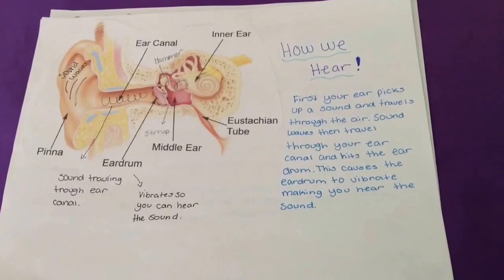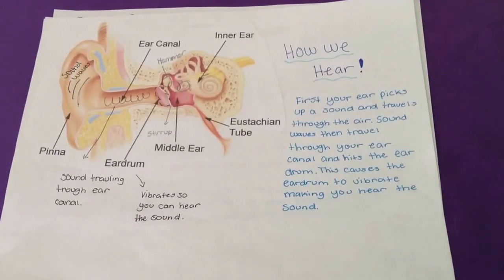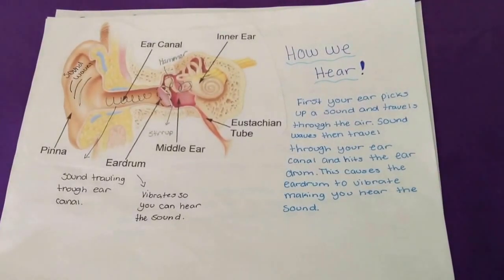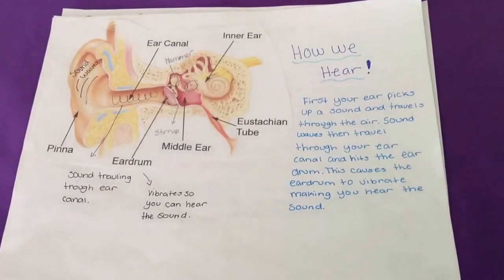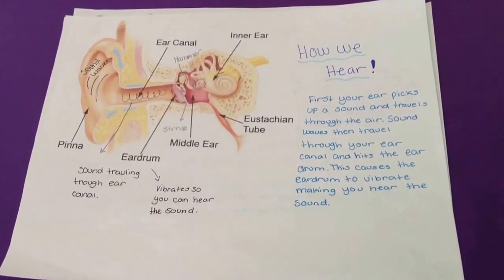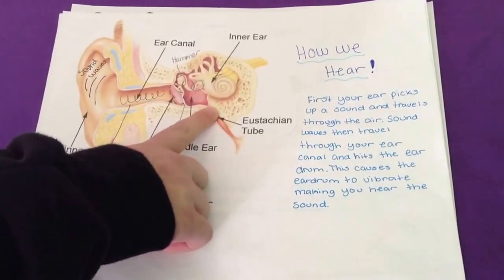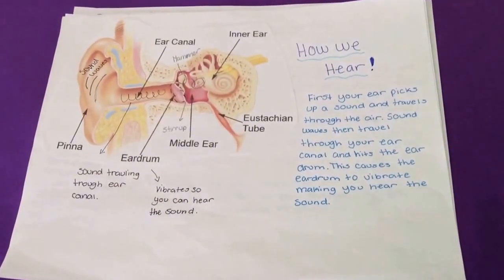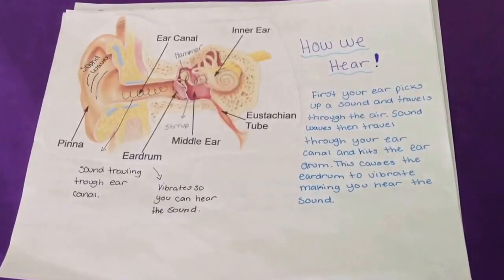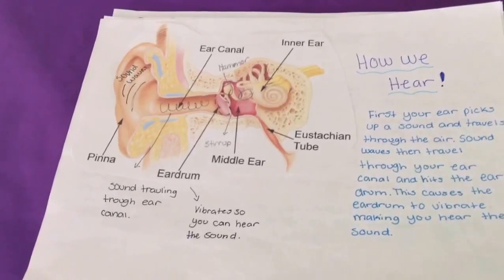Inner ear. Sound waves — first, your ear picks up the sound and it travels to the ear. Sound waves then travel through your ear canal and hit the eardrum, causing it to vibrate, making you hear the sound. Sound waves travel through the cochlea and are sent through the nerves to the brain.